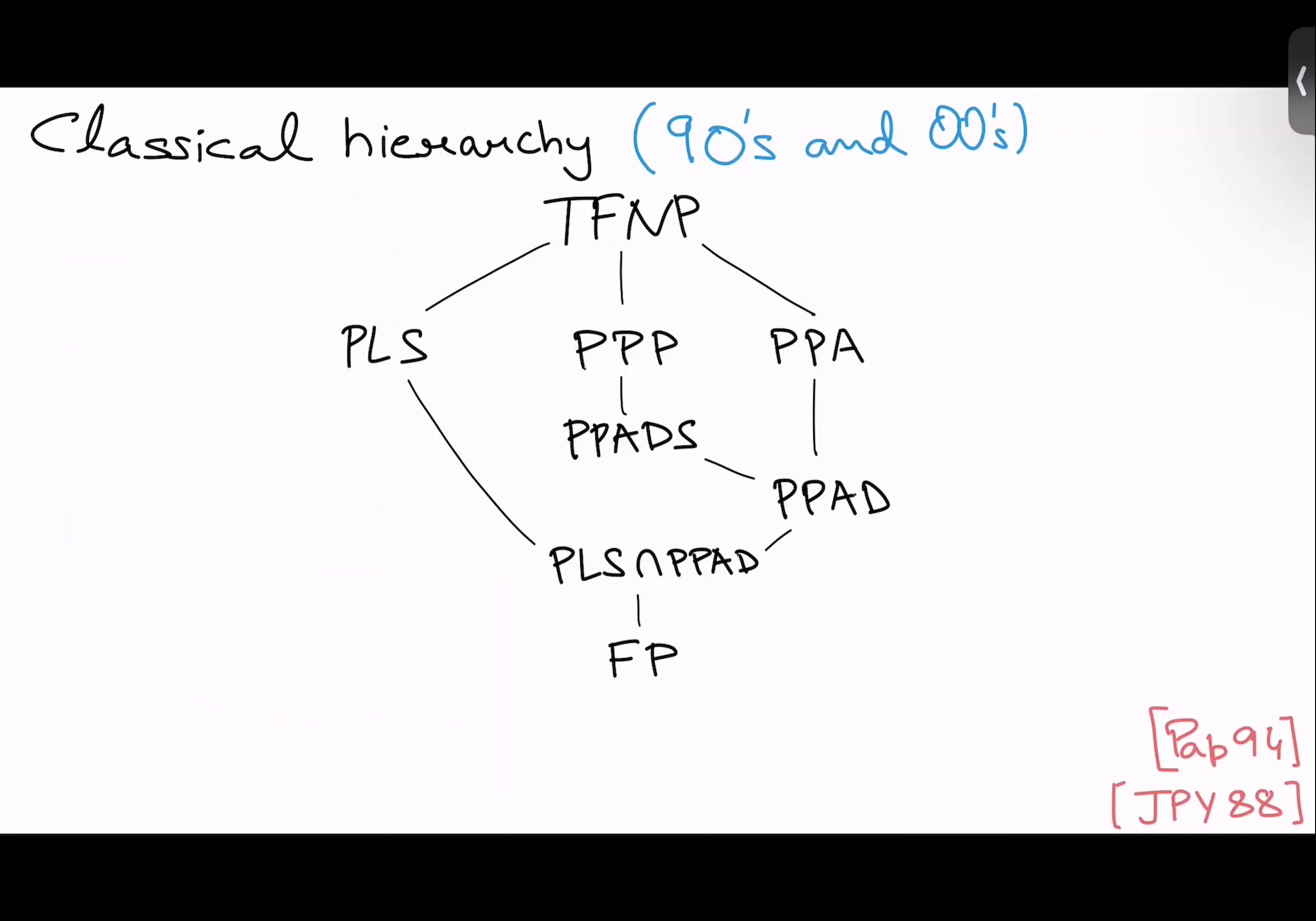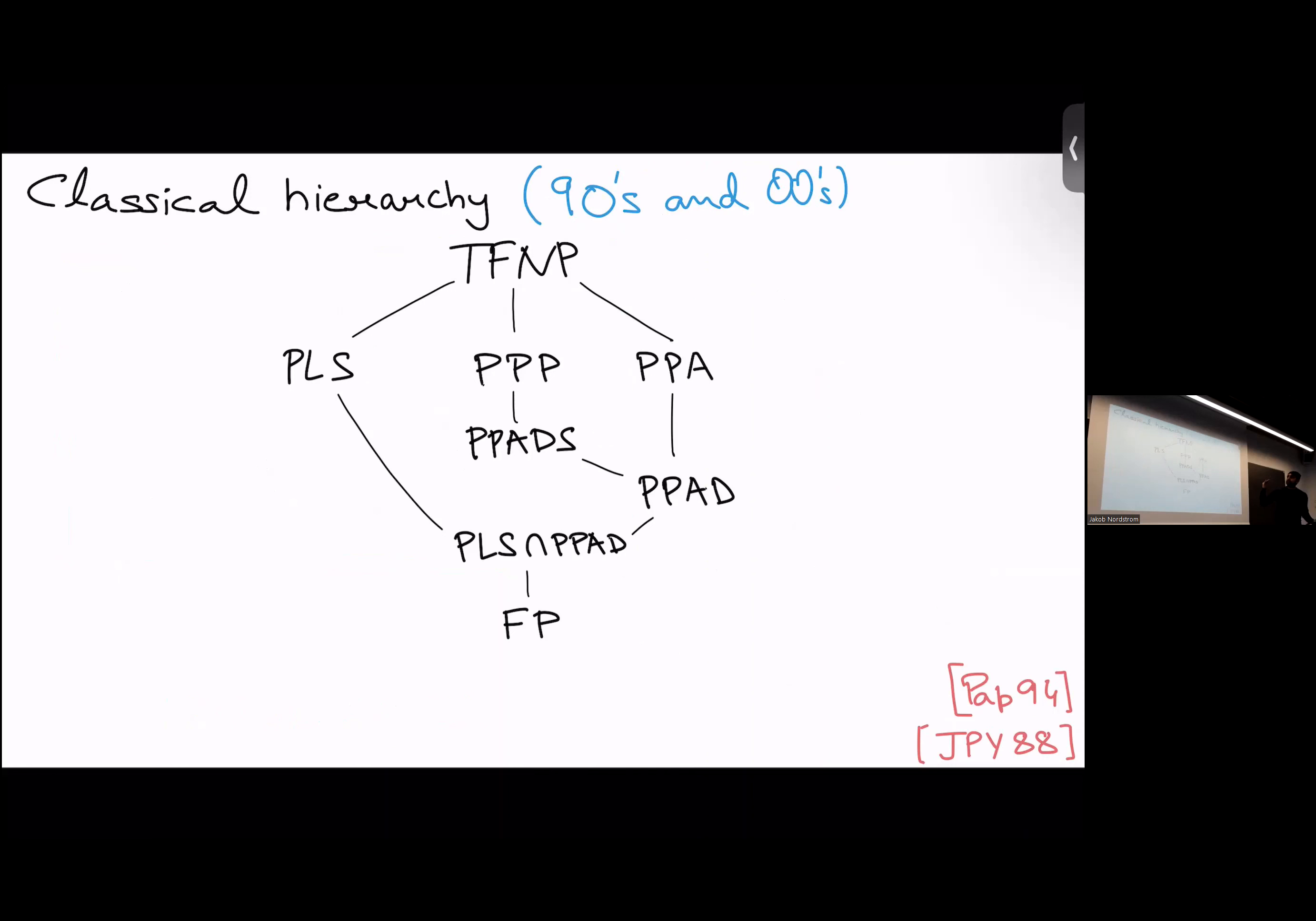In the white-box model, I give you a poly-sized circuit, which when you give it as input the index of a vertex in the graph, it outputs the successor, for example. In the black-box model, this circuit is just replaced with an oracle.